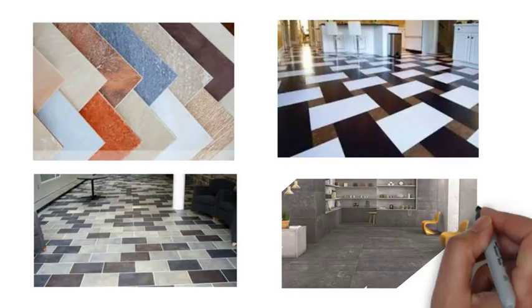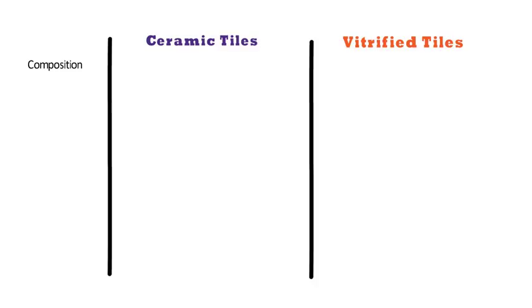Number one is composition. Ceramic tile is made up of a mixture of earthen clay and water only, whereas the term vitrified means to convert into a glass-like substance. In the process of vitrification, 40% clay and 60% silica is added. Vitrified tiles are made by a mixture of clay, silica, quartz, and feldspar, which is a constituent mineral found in granite rock.